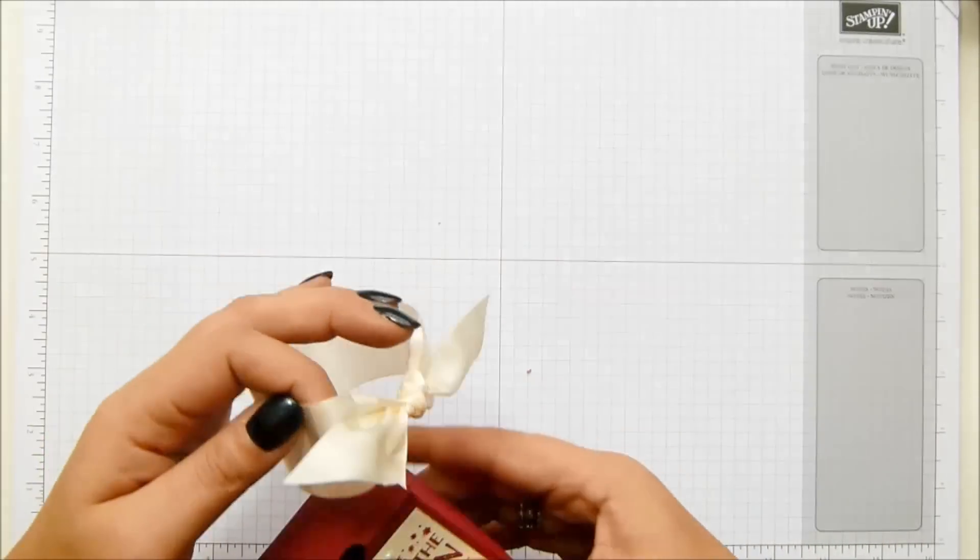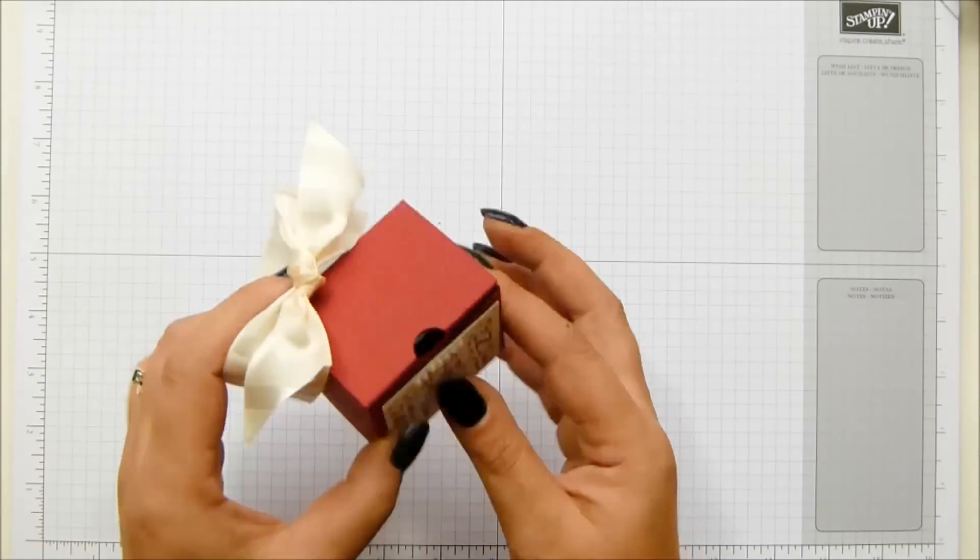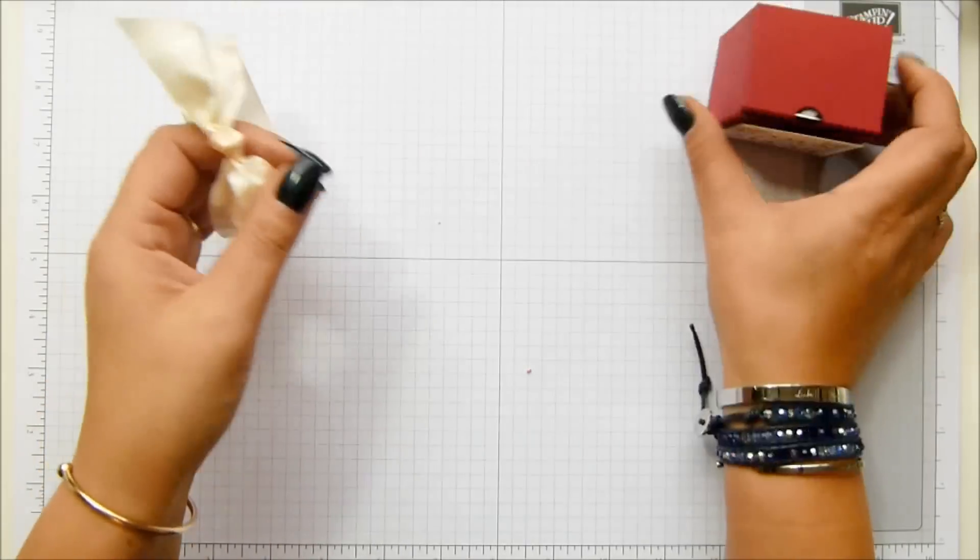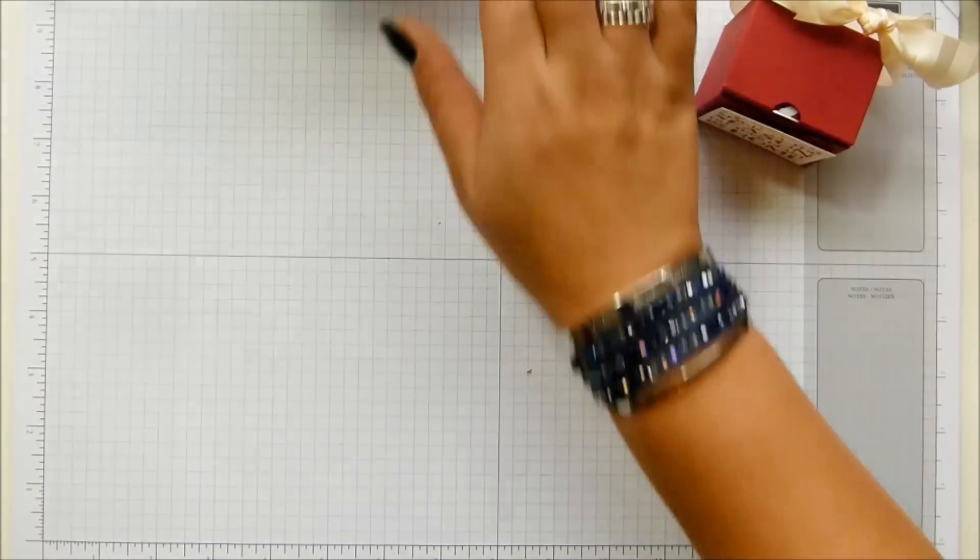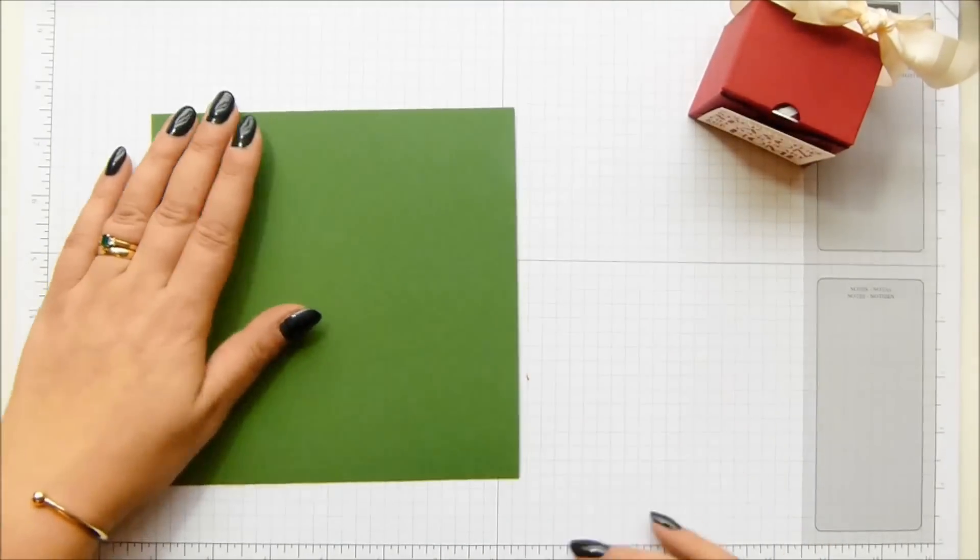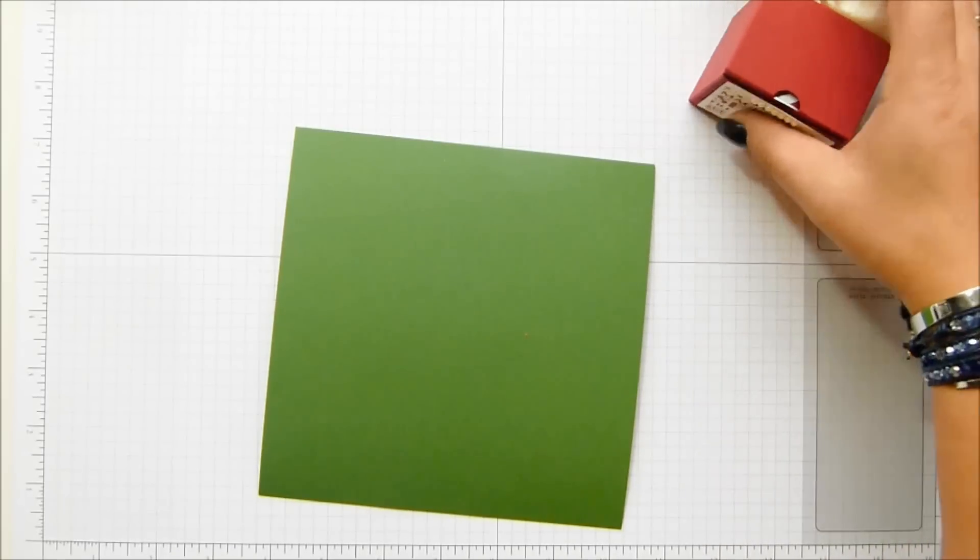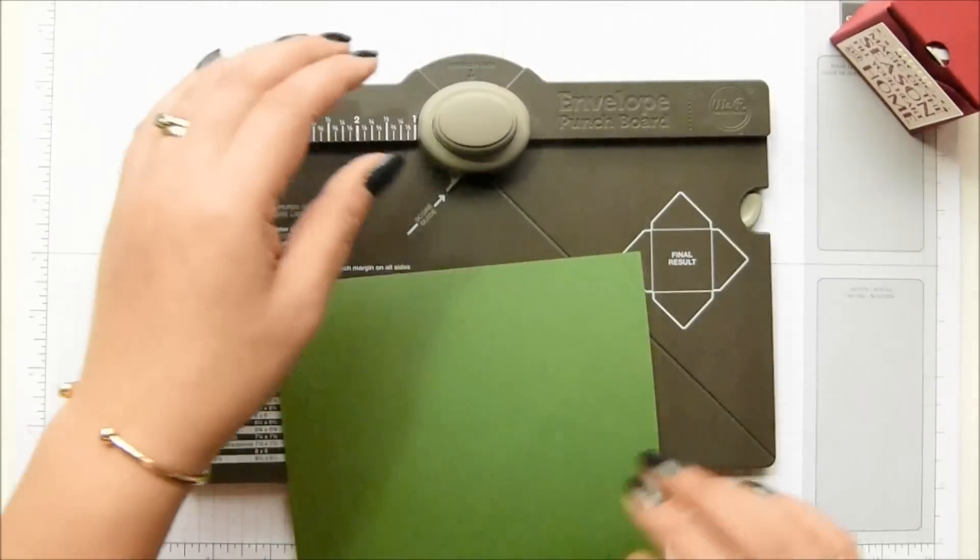They just fit inside absolutely perfectly like that. Box closes down, bow goes on it and it goes across the top and the decoration goes on the front. I'm not going to worry about that so I'm going to show you how to make it. Now you need a piece of cardstock that is six and a half inches by six and a half inches, sixteen and a half centimeters by sixteen and a half centimeters and you need your envelope punch board.